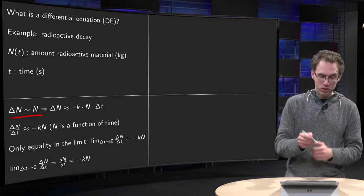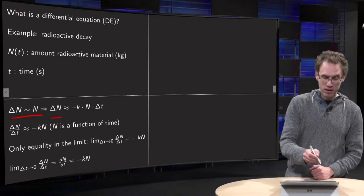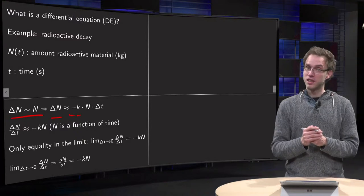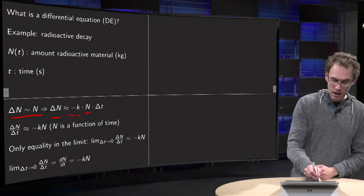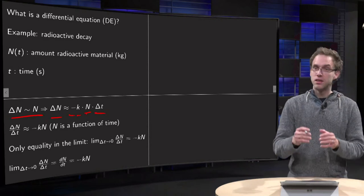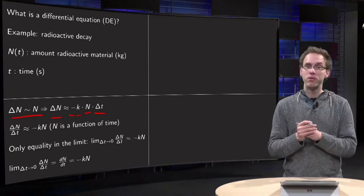Now, the total loss of material, delta N, is approximately given by minus, because you are losing, a proportionality constant K, the N which you already had, times delta t, the time interval. The longer you let it run, the more will decay.